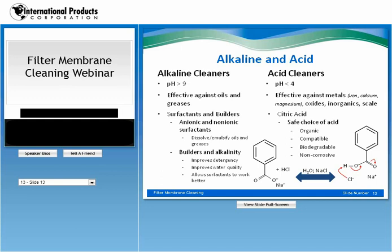The other end of the pH spectrum are acid cleaners, generally formulated to have a pH lower than 4. Unlike alkaline cleaners, acid cleaners are effective against metals such as iron, calcium, magnesium, oxides of those metals, inorganics, and scale — hard water deposits. Citric acid is becoming much more prevalent in the membrane cleaning industry because of the green initiative. It's a safe choice: not harmful like sulfuric or hydrochloric. Citric acid is organic, has excellent compatibility with many membrane polymers, biodegrades, and is non-corrosive. When you combine citric acid with a surfactant or two, you have a fairly robust acid cleaner with excellent compatibility.